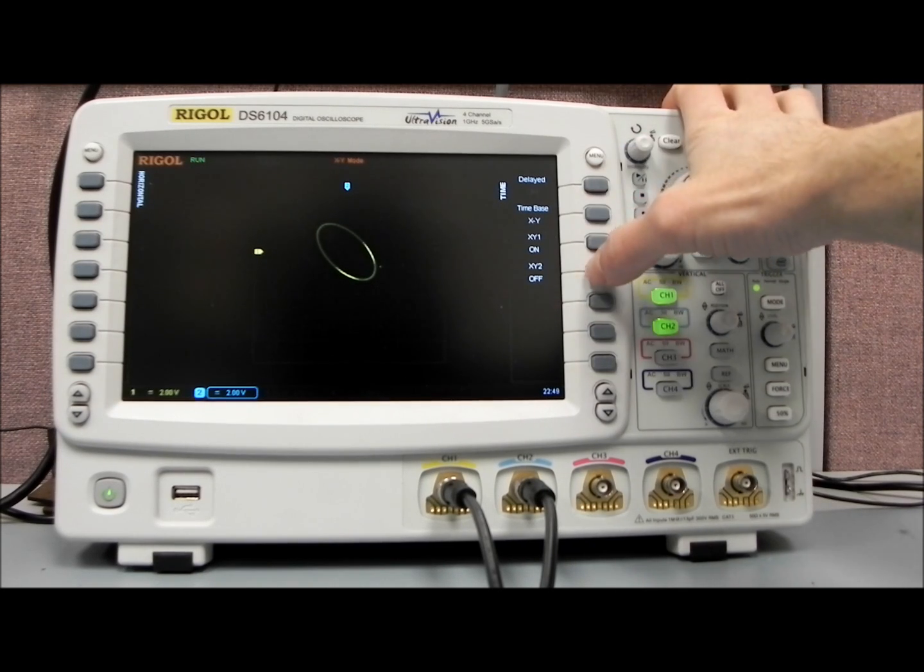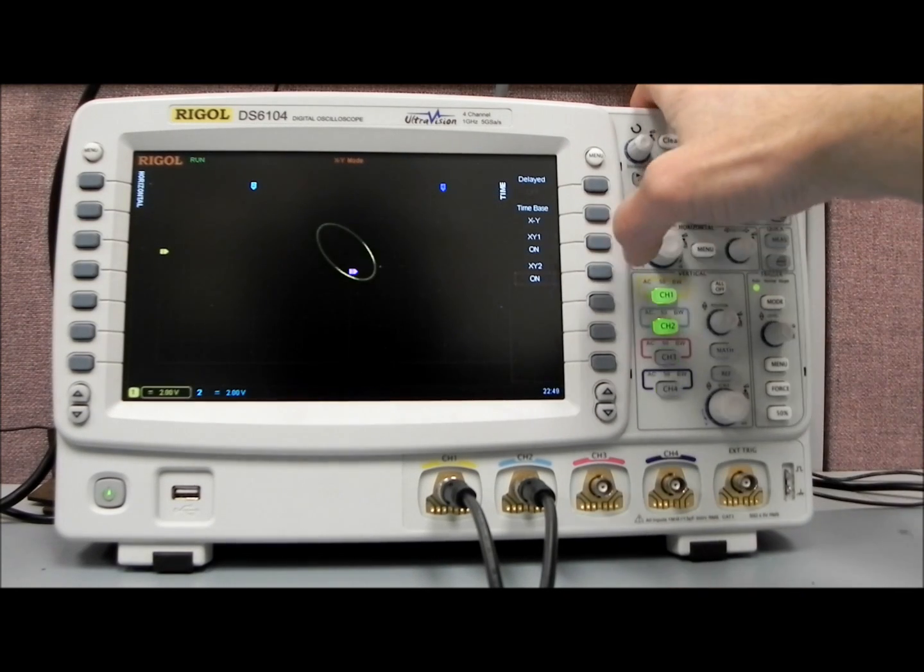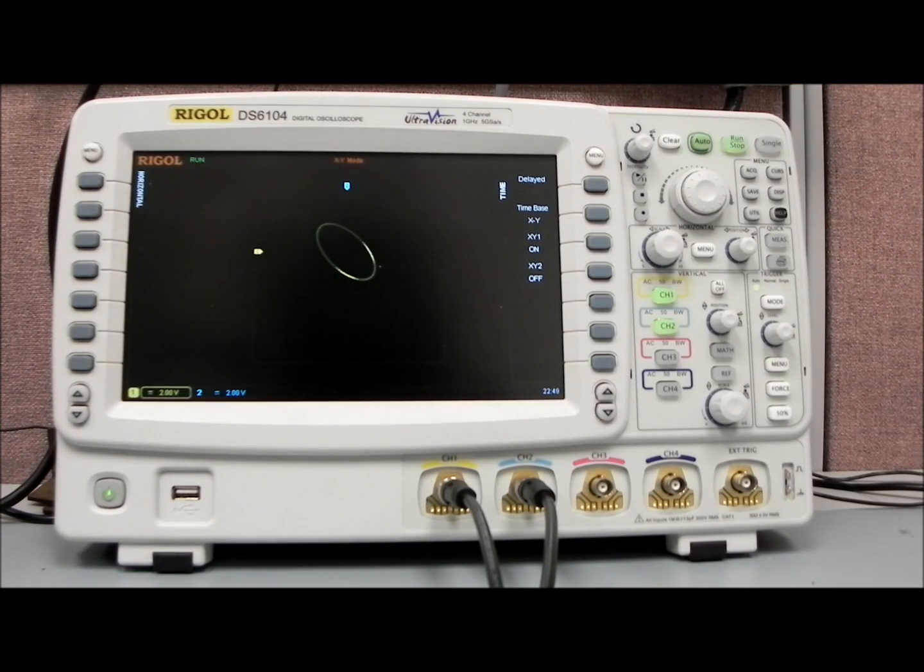And we also can enable a second axis if you want to do channels 3 versus channel 4, which can be helpful if you're analyzing some more signals that way.